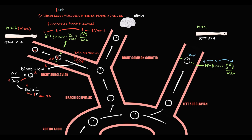Usually the blood pressure difference is more than 20 mmHg. Normal blood supply to the left arm gives a normal pulse, so the pulse on the left arm remains normal, but the pulse on the right arm becomes significantly weaker.